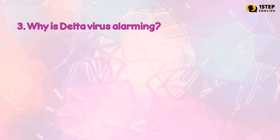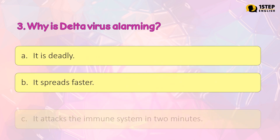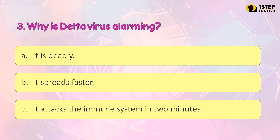Number 3: why is the Delta Variant alarming? Letter A: it is deadly. Letter B: it spreads faster. Letter C: it attacks the immune system in 2 minutes. The correct answer is Letter B — it spreads faster.